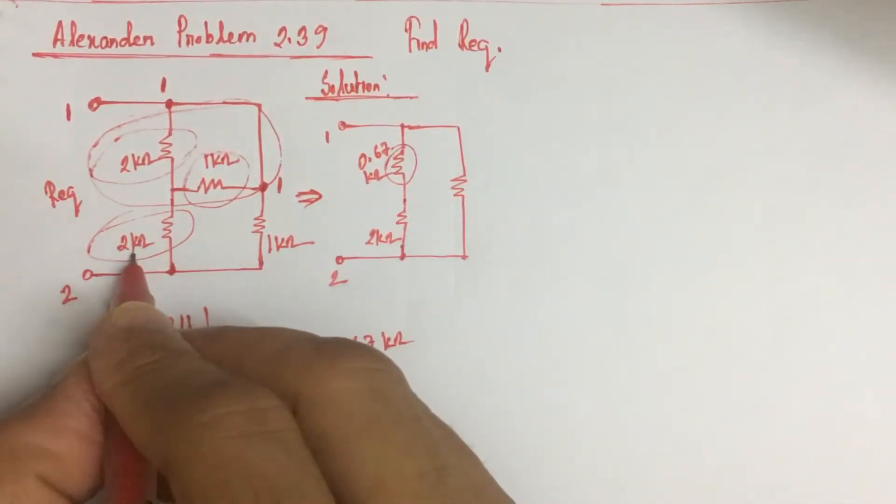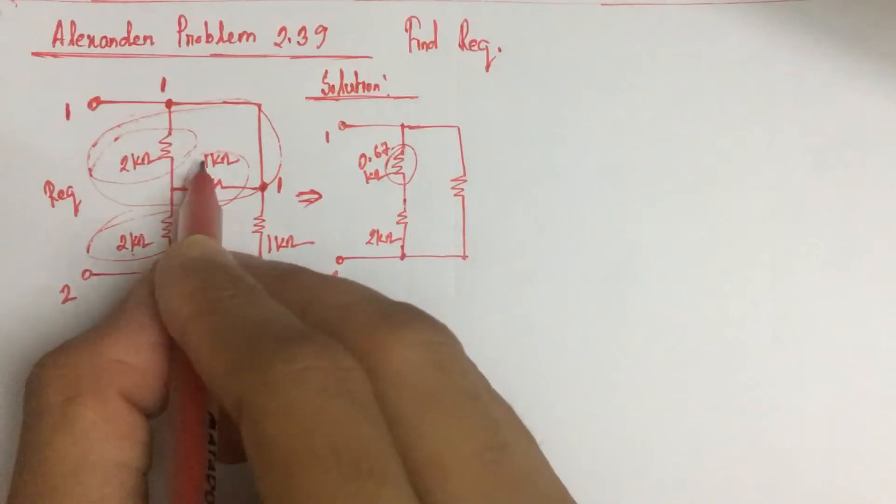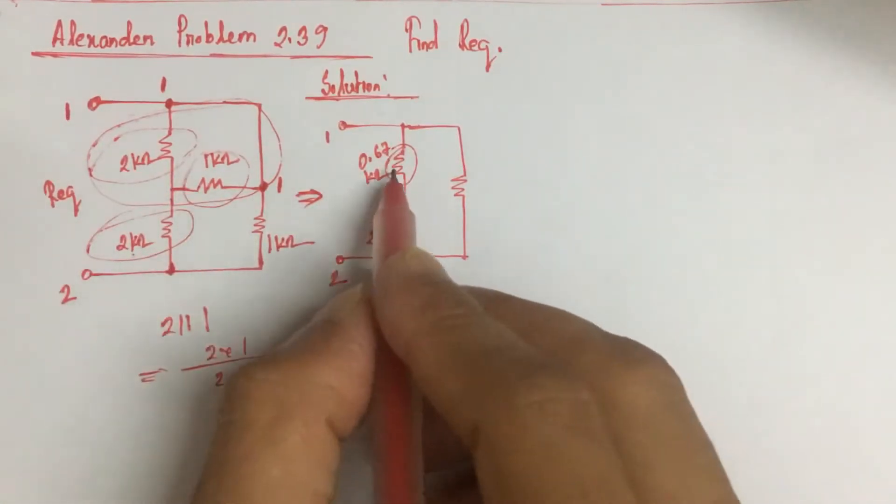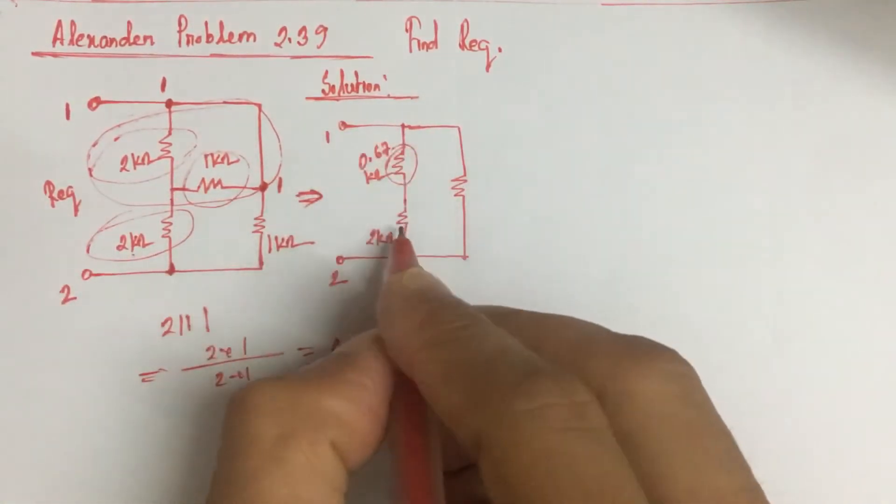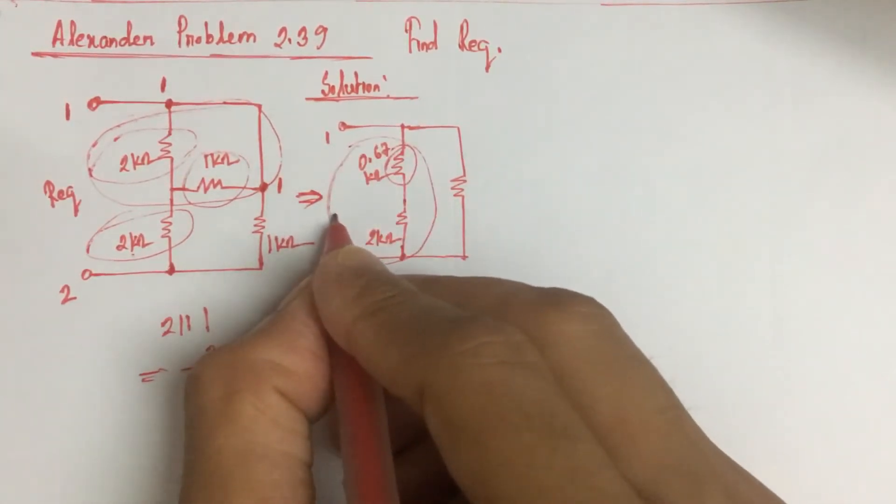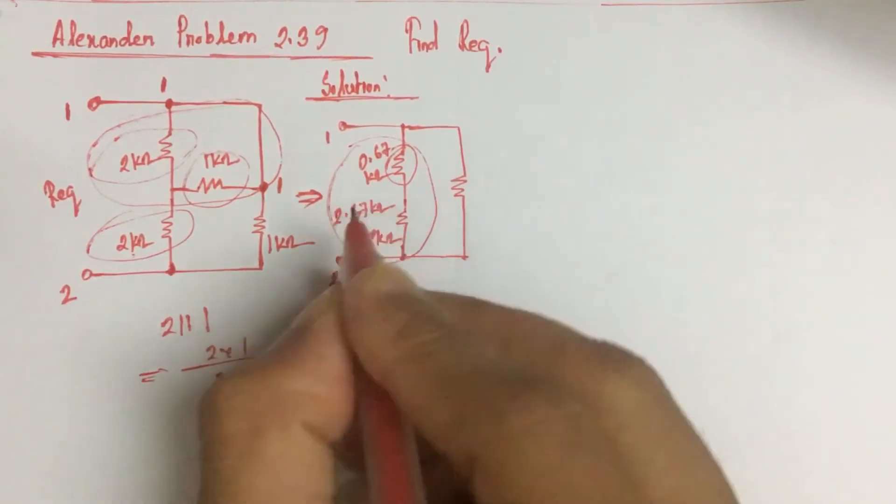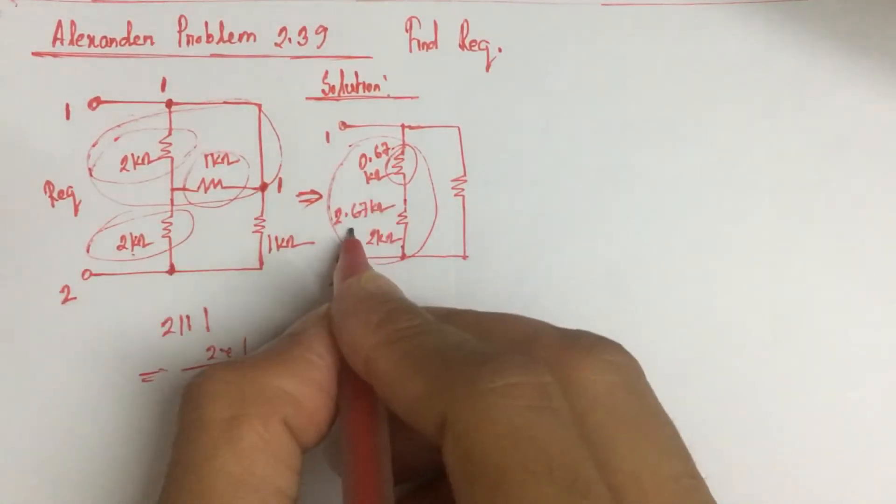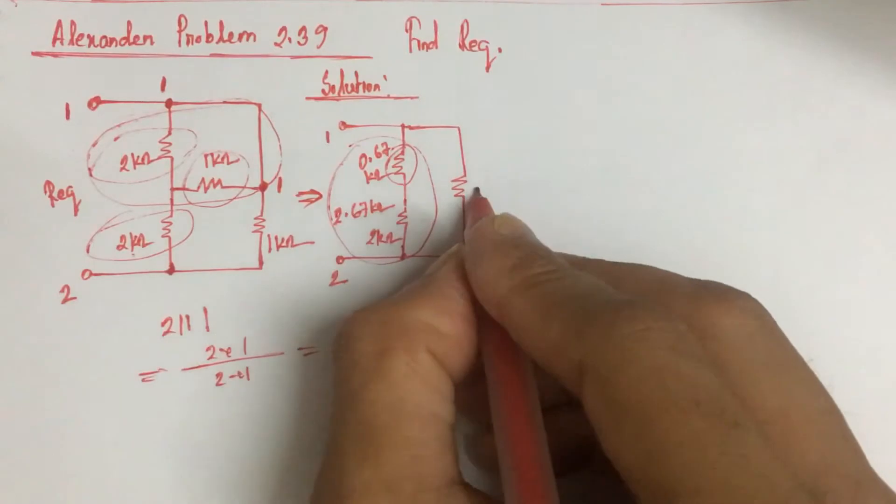Now this 2 kilo ohm resistance and equivalent parallel resistance of 0.67 kilo ohm are in series. Since this is in series, this is 2.67 kilo ohm. Now this 2.67 kilo ohm is in parallel with this 1 kilo ohm.